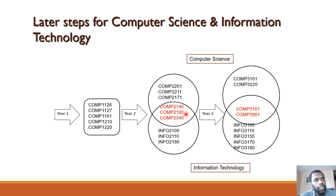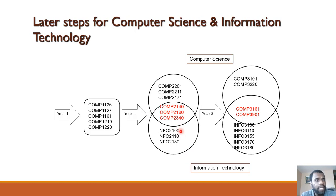If your major is Information Technology, you take the three courses shared with Computer Science, and then also Info2100 (Math and Statistics for IT), Info2110 (Data Structures for IT), and Info2180 (Introduction to Web Programming).